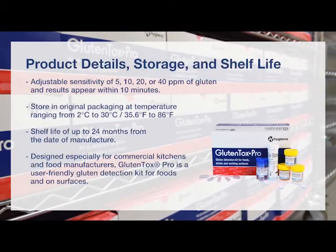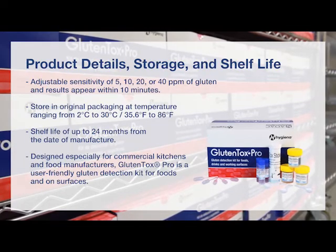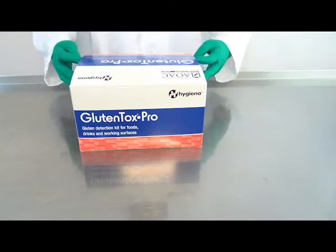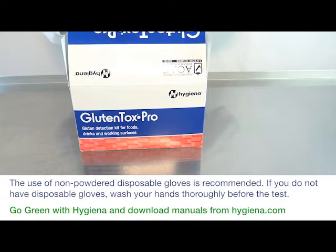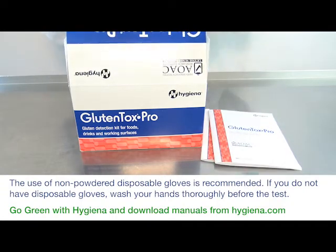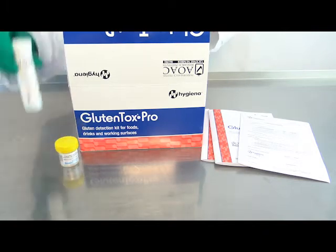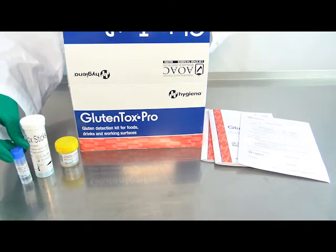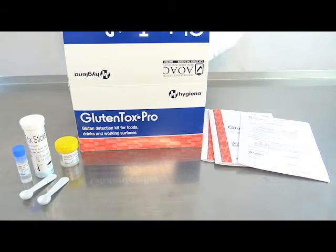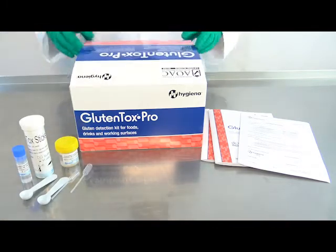For further information on product details, storage and shelf life refer to the manual. When opening the box you will find manuals, a quality certificate, extraction solution with a yellow cap, gluten tox sticks, dilution solution with a blue cap, disposable spoons, and plastic pipettes.